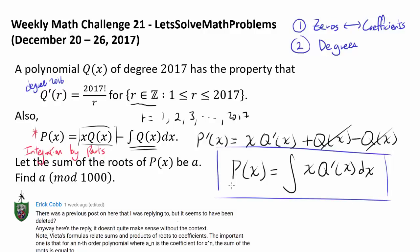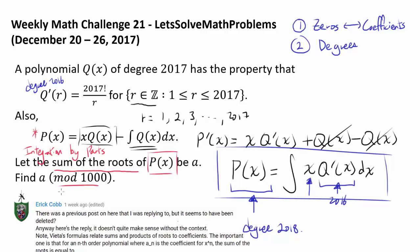Now what's the degree of P(x)? We know the degree of Q'(x) is 2016. Multiplying by x gives degree 2017. Integrating a polynomial of degree 2017 gives P(x) of degree 2018. What do we want to find? We want to find the sum of the roots of P(x), and then find the remainder when dividing by 1000. One of the first tools for this is Vieta's formula.